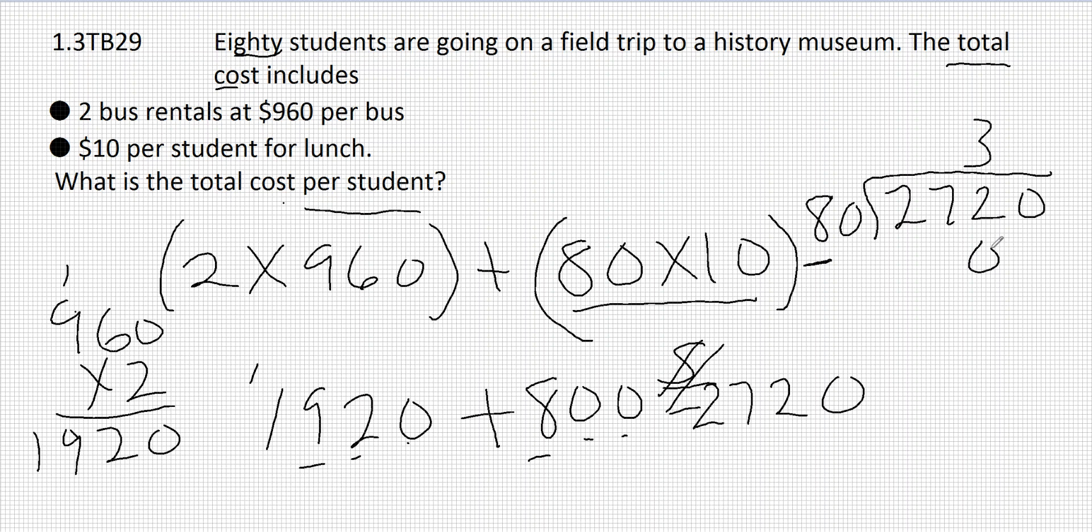So 3 times 0 is 0, 3 times 8 is 24, 2 minus 0 is 2, 7 minus 4 is 3.